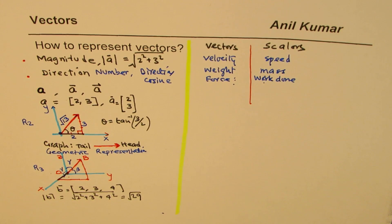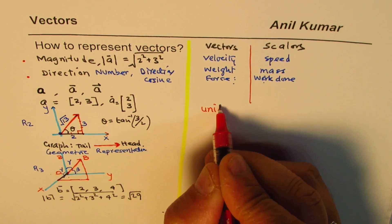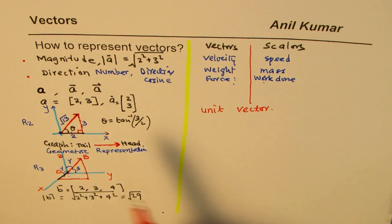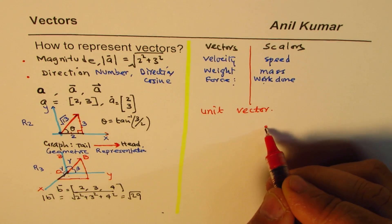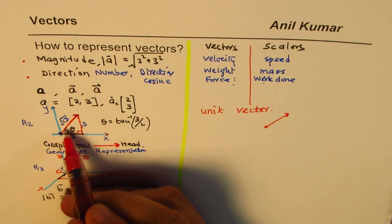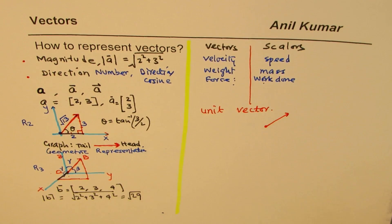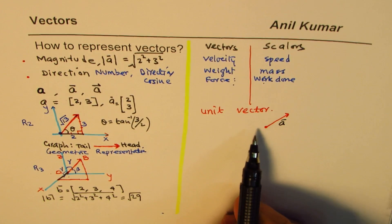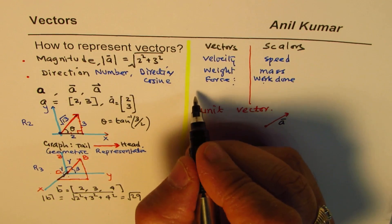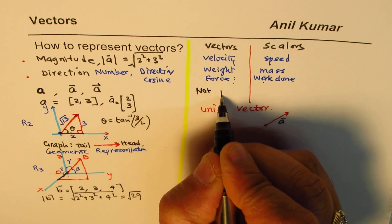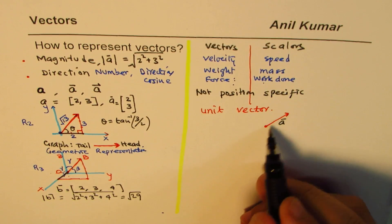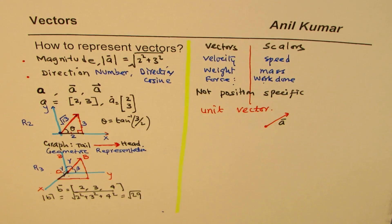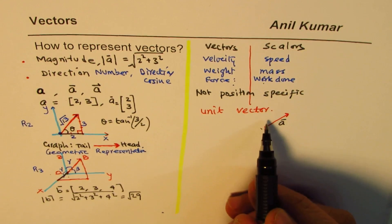One more important term is the unit vector. A vector like (2, 3) can be drawn anywhere — here or there — but if you maintain the same length and direction, it is always the same vector. So vectors are not position-specific; you can move them anywhere as long as you maintain direction and magnitude.